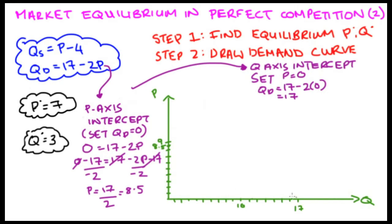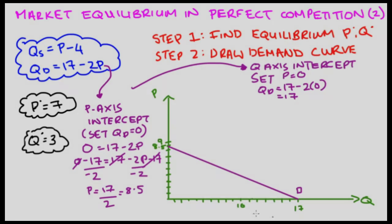Great. So now I can join those two points together. I've got my price axis intercept and my quantity axis intercept. I can join those two points together. I'm going to label it D, our demand curve.